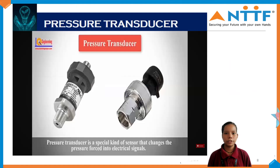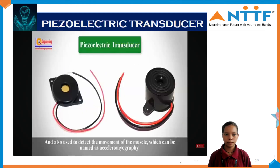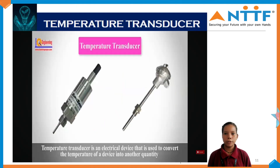The pressure transducer is used to detect the pressure force and convert it into an electrical signal. The ultrasonic transducer is used to measure the distance of sound based on reflection. The piezoelectric transducer is used to detect the movement of muscles. The temperature transducer is used to detect temperature and convert it into electrical signals.